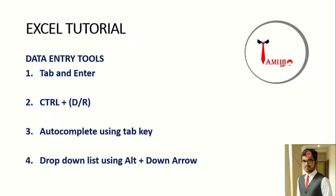Hello all. I am Sugma from Management Tamila. Today we are going to see four important data entry tools in Excel. The first one is Tab and Enter. Second one is Control plus D. Third one is auto complete using Tab key, and fourth one is drop-down list using Alt plus down arrow. We will see each and every one of the data entry tools with examples.